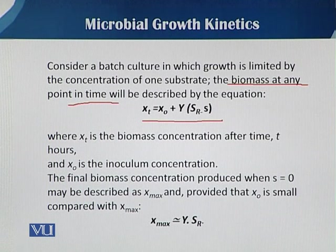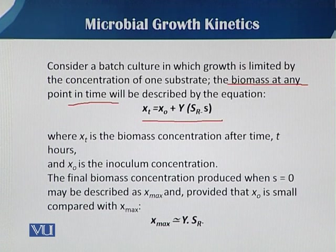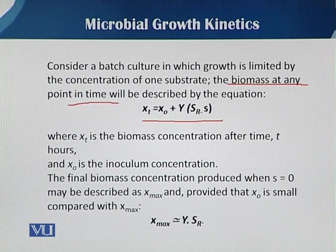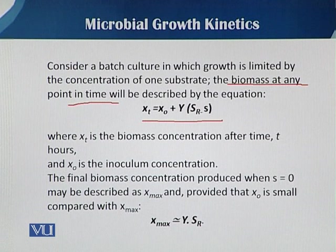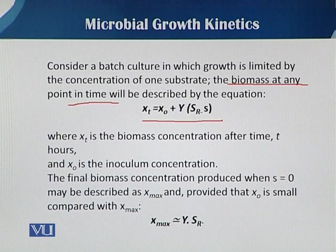SR represents the initial substrate concentration — R can be denoted by reservoir — meaning the amount of substrate present in the fermenter vessel at the time of start. Minus S, where small s represents the residual substrate at time t. This whole equation means: biomass concentration equals the biomass concentration as inoculum, plus the increase in yield with respect to the initial substrate concentration minus the substrate remaining in the vessel at the time of the fed batch strategy.